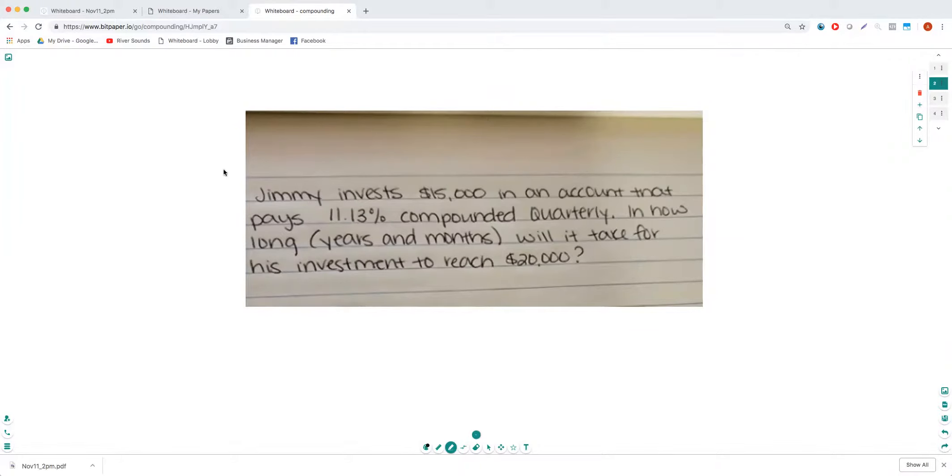All right, one of the questions on the groups. Jimmy invests $15,000 in an account that pays 11.13% compounded quarterly. In how many years and months will it take for his investment to reach $20,000?